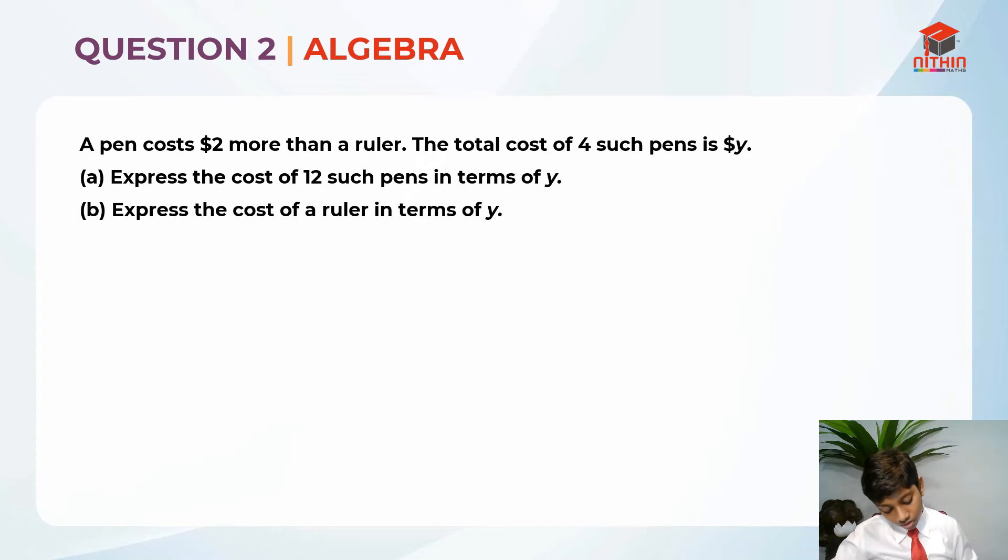Now that we have read the question, let's solve it. Let's solve for part A. No, we should not do that. We should highlight the key information. So, a pen costs $2 more than a ruler. The total cost of 4 such pens is Y dollars. Part A, express the cost of 12 such pens in terms of Y. Part B, express the cost of a ruler in terms of Y.